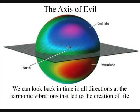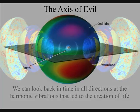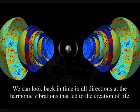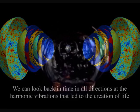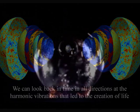Scientists named this the axis of evil because of the damage it could do to current Big Bang theories. But this axis could represent a timeline that formed life, giving us the ability to look back in time at the harmonic vibrations that led to the creation of life.